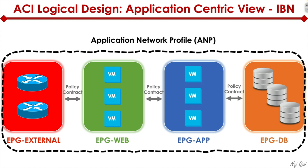You could have dozens of different applications in your network, and for each application you would define a different Application Network Profile with unique policy contracts to define how communication flows will look. There's also an element of micro-segmentation and security built in — you can go very deep at a micro-segmentation level or keep things at a high level. At the CCNA level, we keep it at a high level.